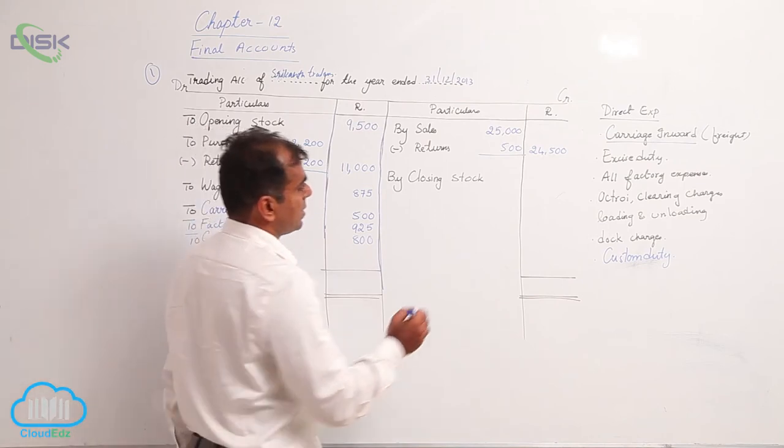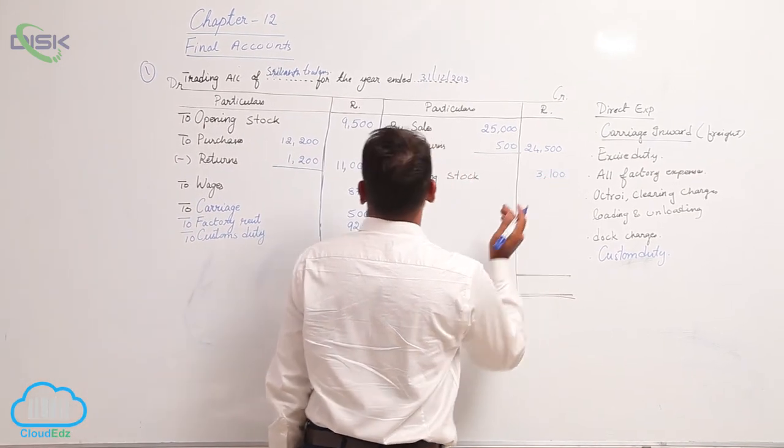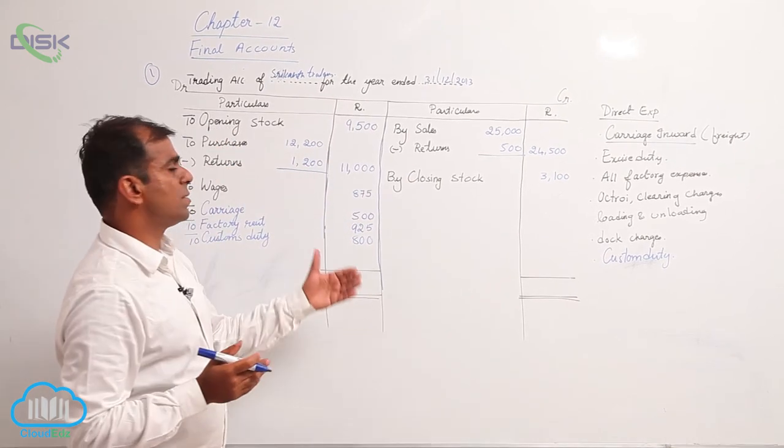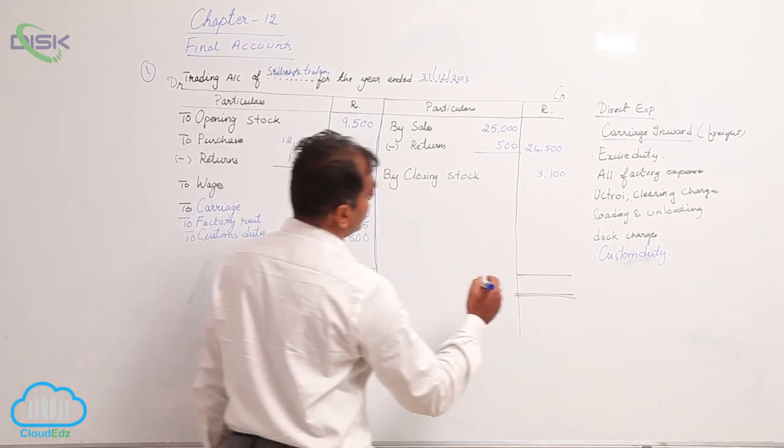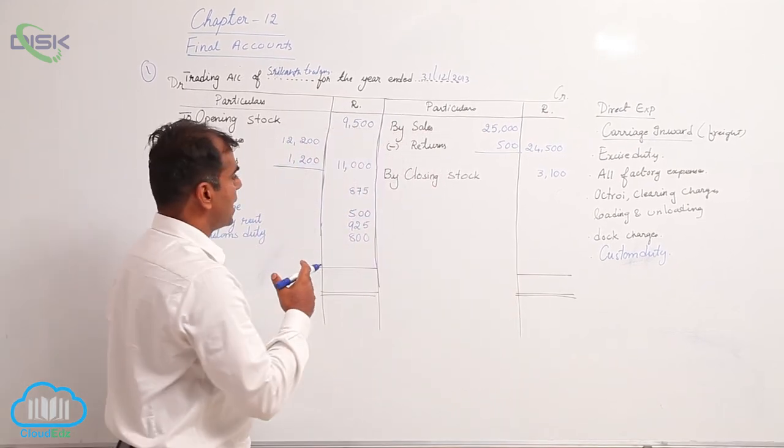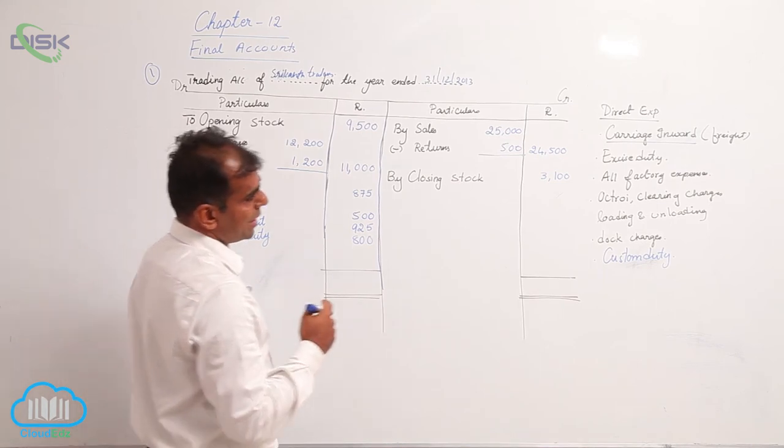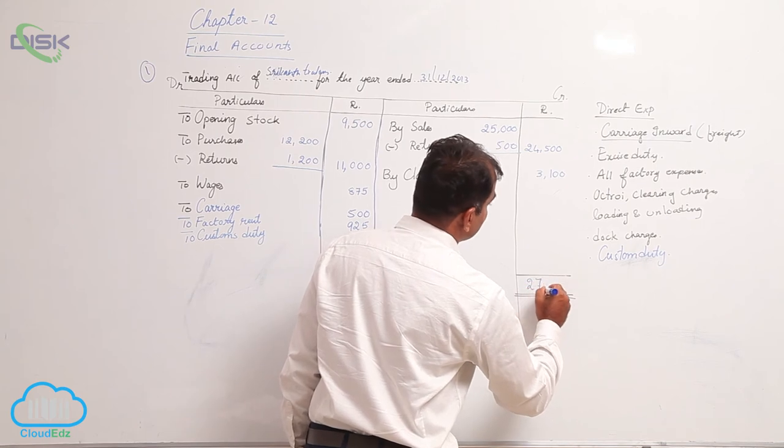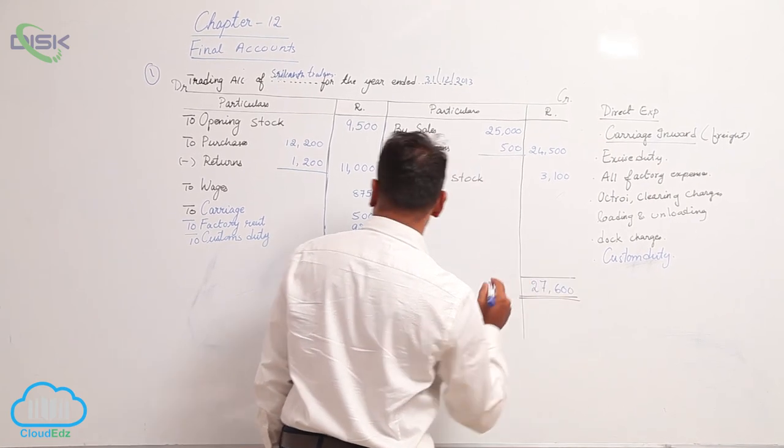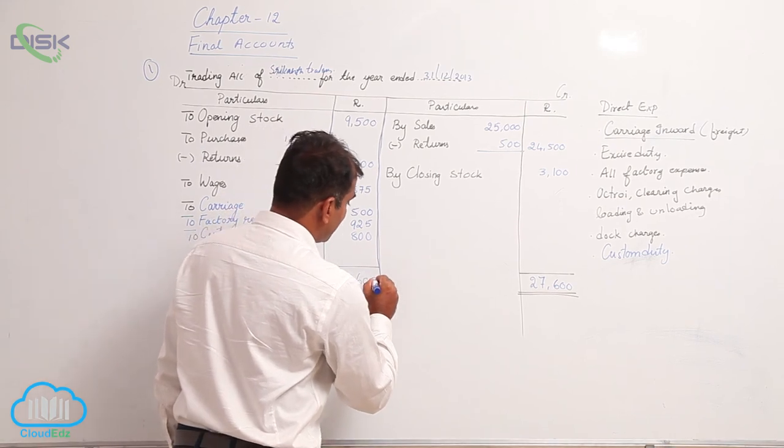Now as usual how you balance normally the ledgers we balance this account. That is you have a total of - if you compare both sides the credit side total is more than debit side. The credit side total coming to 27,600. Since this total is more I am going to take on both the sides.